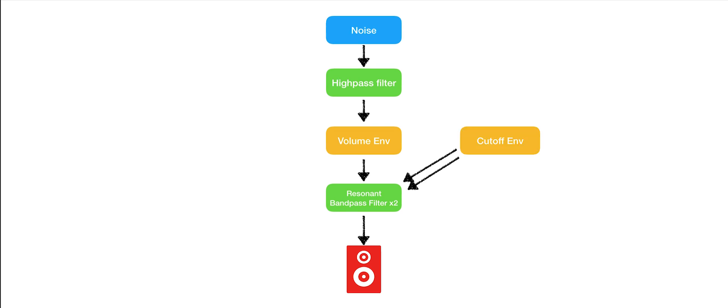This snare sound is based around white noise. Obviously we also have a volume envelope to make the sound decay. We remove some of the lower frequencies from the noise with a high pass filter. We add some resonance with two wide band pass filters. These filters also have an envelope applied to control the cutoff frequency, making it decay quickly.